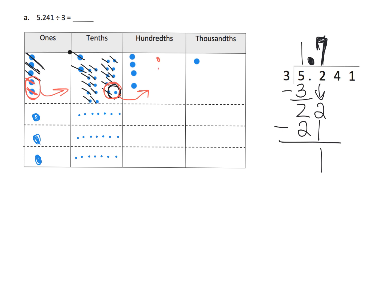We cash that 1 tenth in for 10 hundredths, and we already have 4 hundredths from the original number, giving us 14 hundredths total. In the standard algorithm, we bring down the 4 and now have 14 hundredths. We need to take these 14 hundredths and sort them equally into 3 groups.